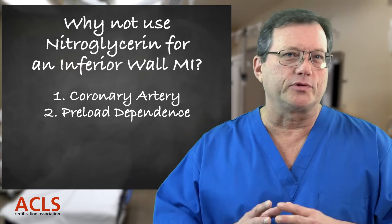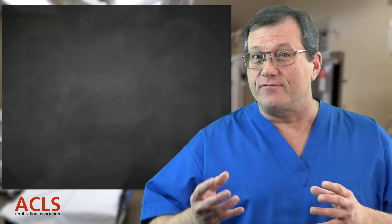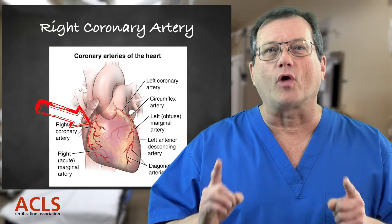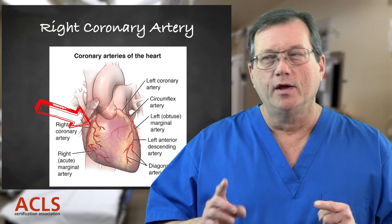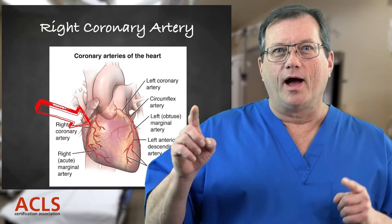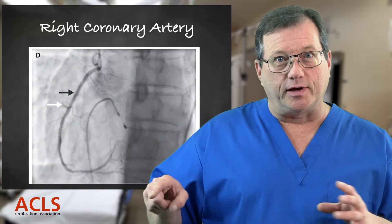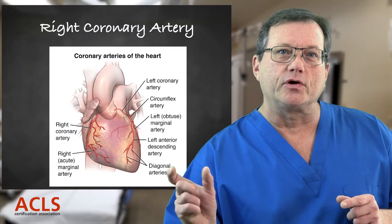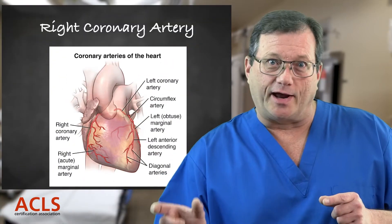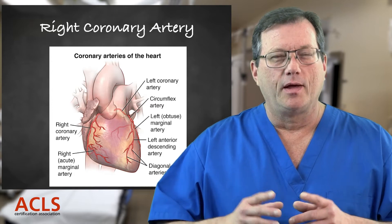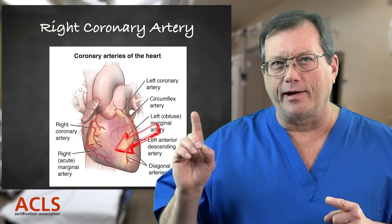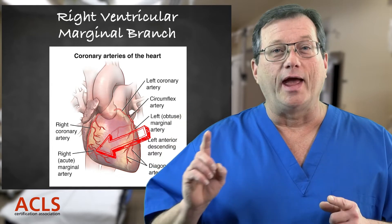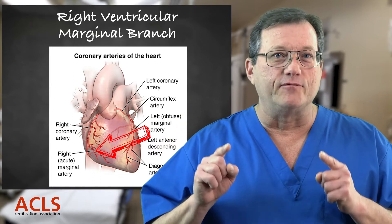Let's start with the coronary artery involved. The inferior wall of the heart predominantly receives its oxygen supply from the right coronary artery. When you look at the RCA from the cath lab it kind of looks like a C - it comes all the way around and supplies blood and oxygen to the inferior wall. But that's not the problem. The problem is the right ventricular marginal branch, which supplies the right ventricle of the heart.